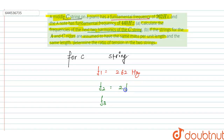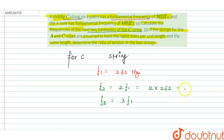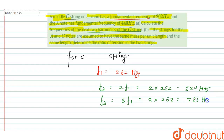We know that f2 is equal to 2 times f1, and f3 is equal to 3 times f1. Substituting the value: f2 = 2 × 262 = 524 Hz, and f3 = 3 × 262 = 786 Hz. This is the answer for part (a).